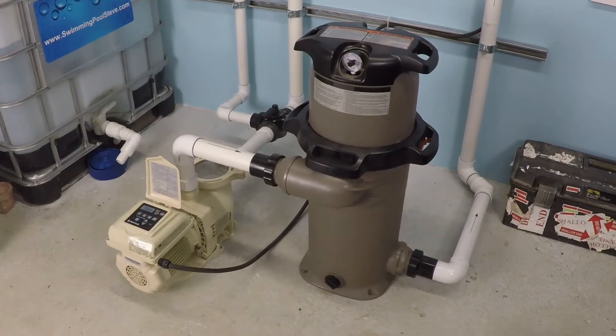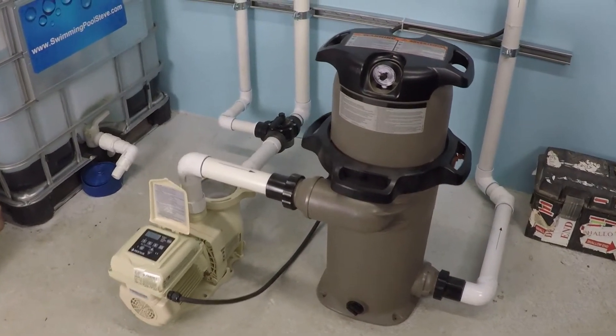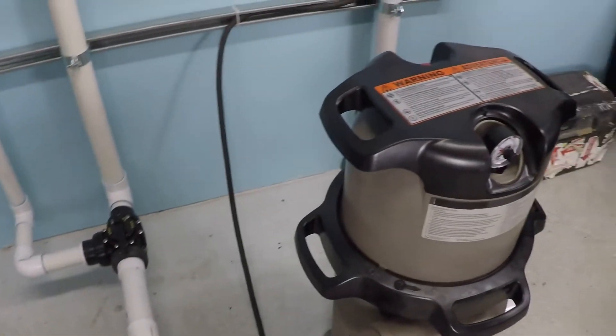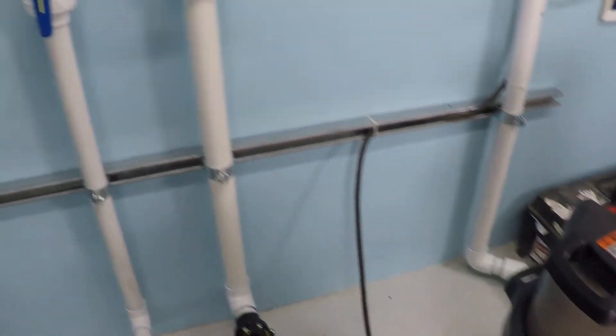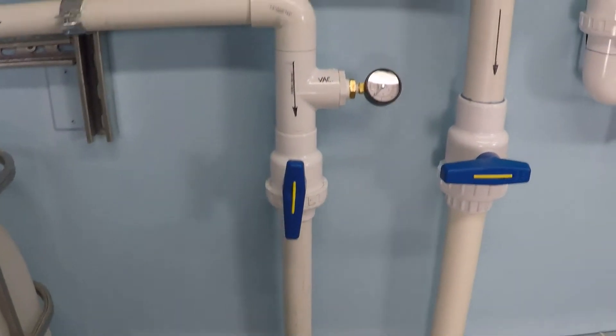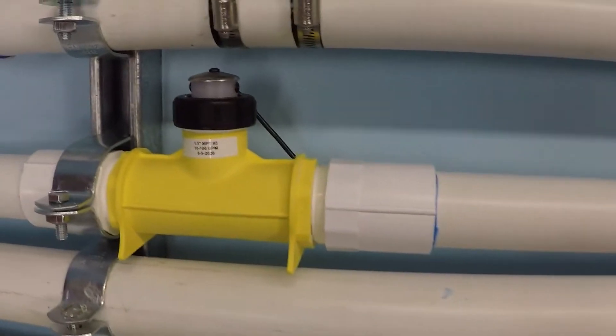This is a flow and power consumption test for inch and a half plumbing with a one and a half horsepower variable speed pump and a 150 square foot cartridge filter. We're going to be using a single inch and a half suction line and a single inch and a half return line.